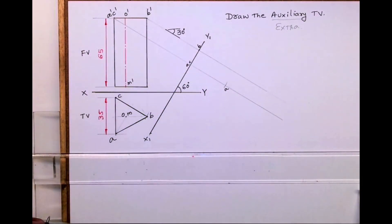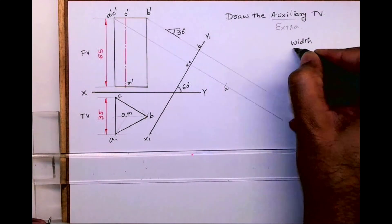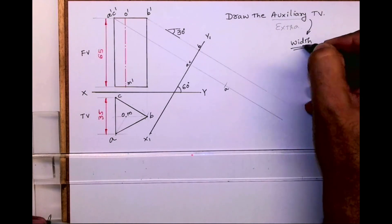Got it. Same way I will do. This is important. Whenever you are doing auxiliary top view, you are transferring width.